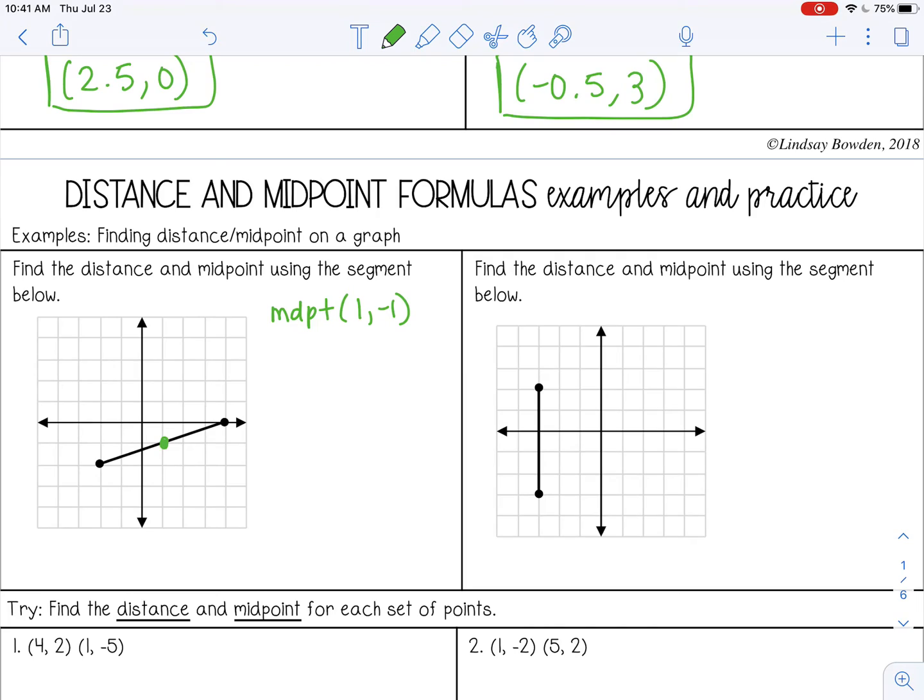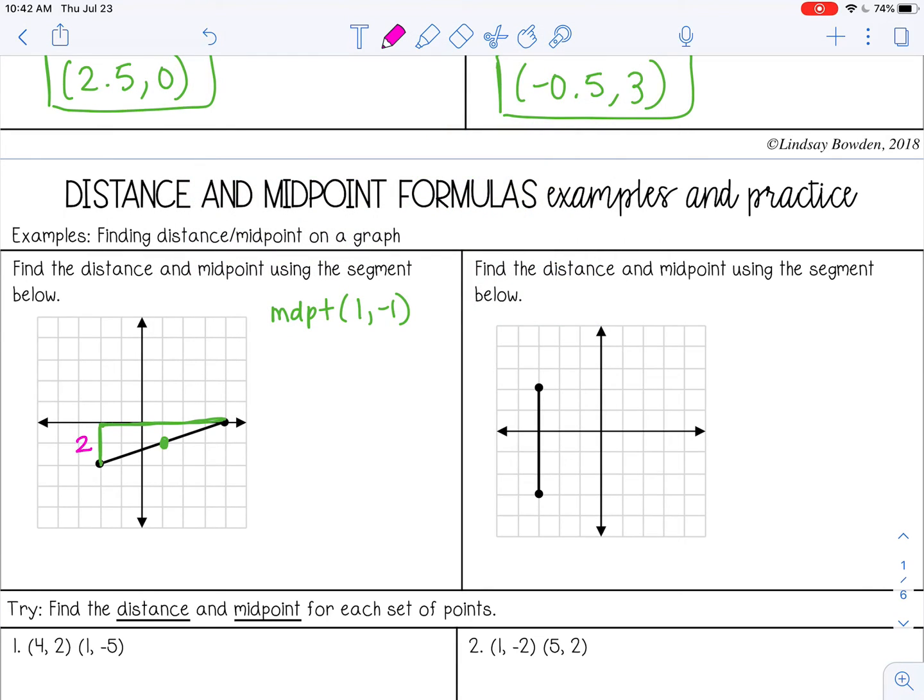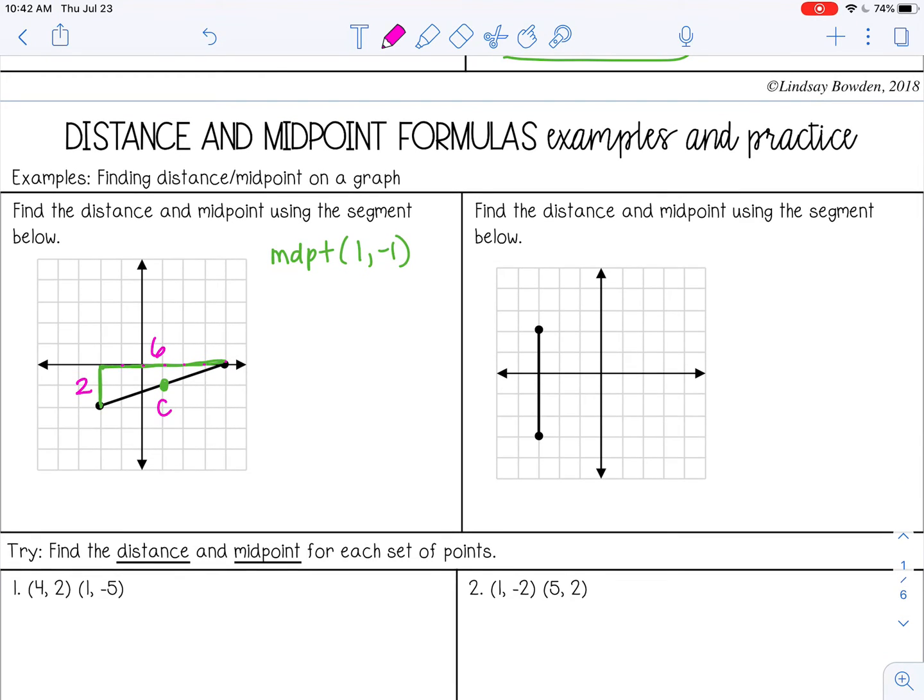However, for distance, I am going to have to use the distance formula or the Pythagorean theorem. So let's try the Pythagorean theorem. So what I mean by that is I can use the line segment as the hypotenuse of a right triangle. So this is 2. It has a distance of 2: 1, 2, 3, 4, 5, 6. And this is my C. So this is just another way to find distance. I could also use the distance formula, but let's try it this way. So 2 squared plus 6 squared equals C squared. So 4 plus 36 equals C squared. 40 equals C squared. So take the square root of that, and that would be 6.3 for my distance.